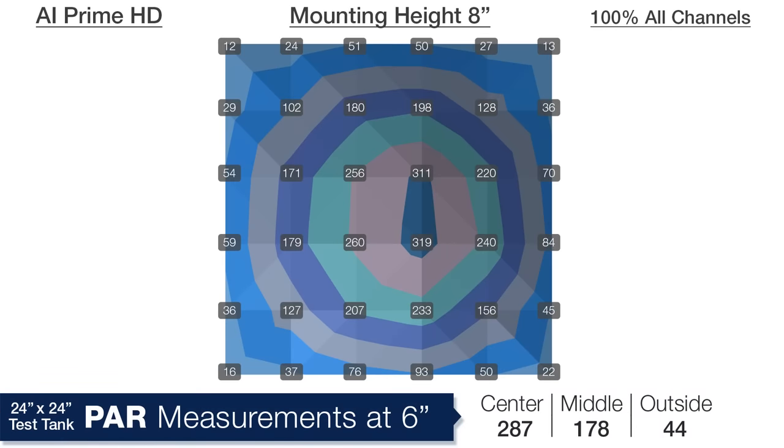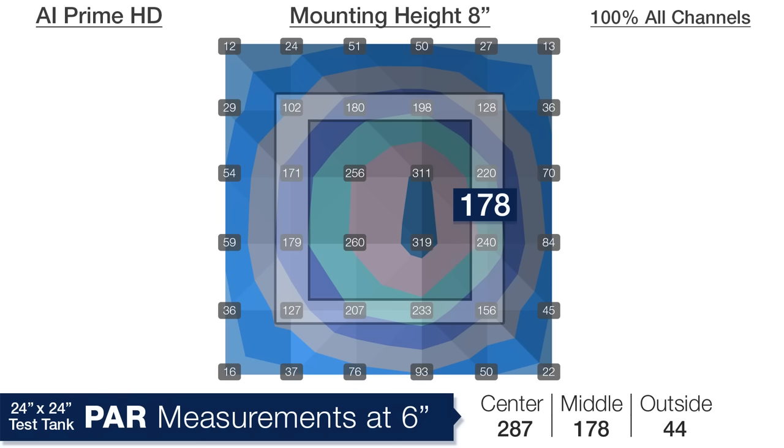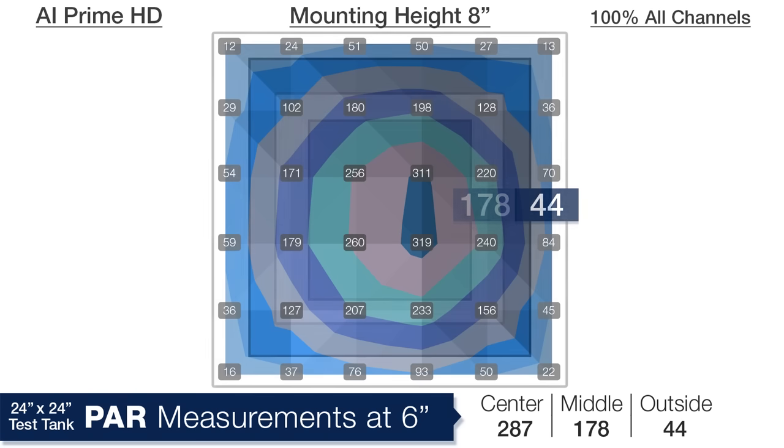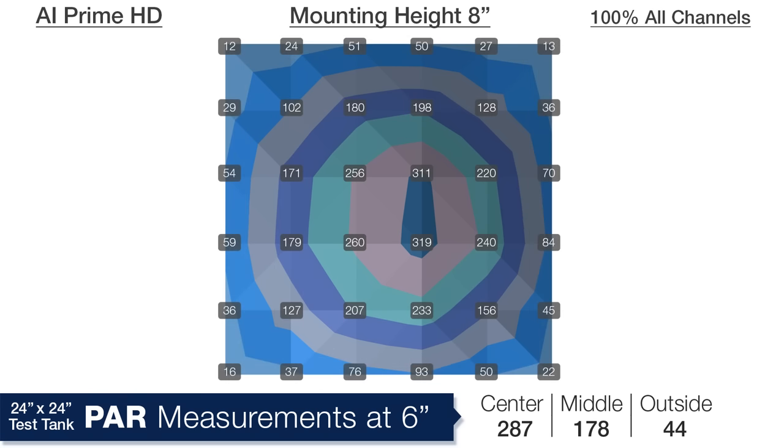At a depth of six inches in the tank and the center four inches we are seeing an average PAR of 287, moving the measurement points out four inches in all sides to the center ring an average of 178 PAR, and just 44 PAR in the outer ring. This is pretty close to what you should expect from a 55 watt LED with a compact single puck like this one.